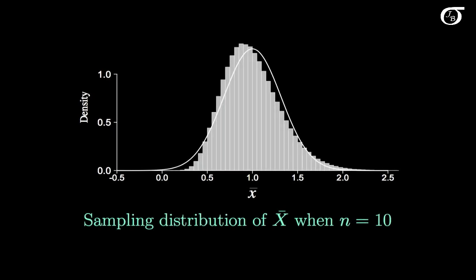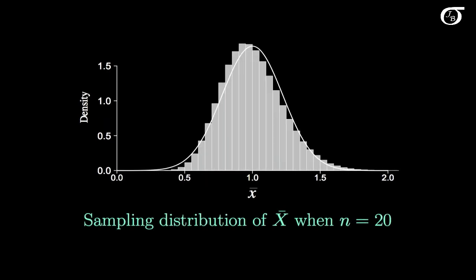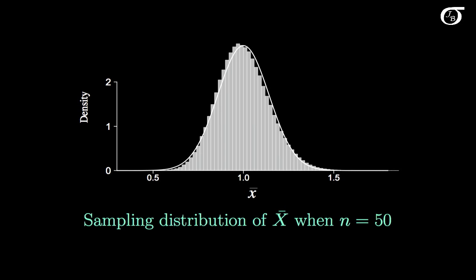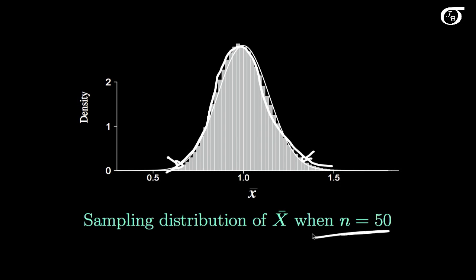Now let's amp up the sample size a little bit more. Here's the distribution when n is 10. How about 20? How about 50? When n is 50, our sampling distribution of X-bar is awfully close to normal. There's still a little deviation in the tails — it's not perfectly normal, it's a little bit off — but it's awfully close. So when our sample size is 50, the sampling distribution of X-bar is approximately normal.